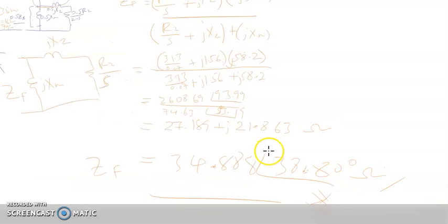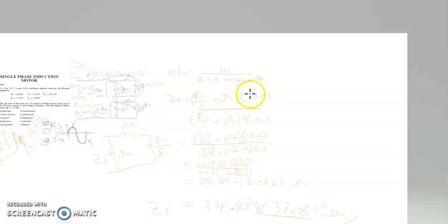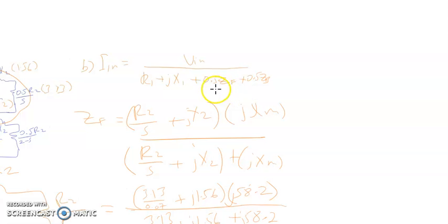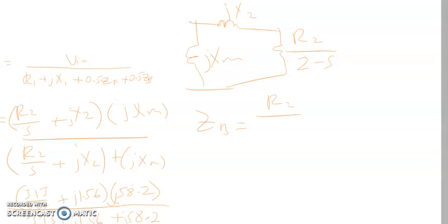Then you'll find your another element of Z backward. You need to find the Z forward and also Z backward. For Z backward, again, your inductance and your resistance and this is your JXM. Z backward is equal to R2 divided by 2 minus S plus JX2 times JXM.